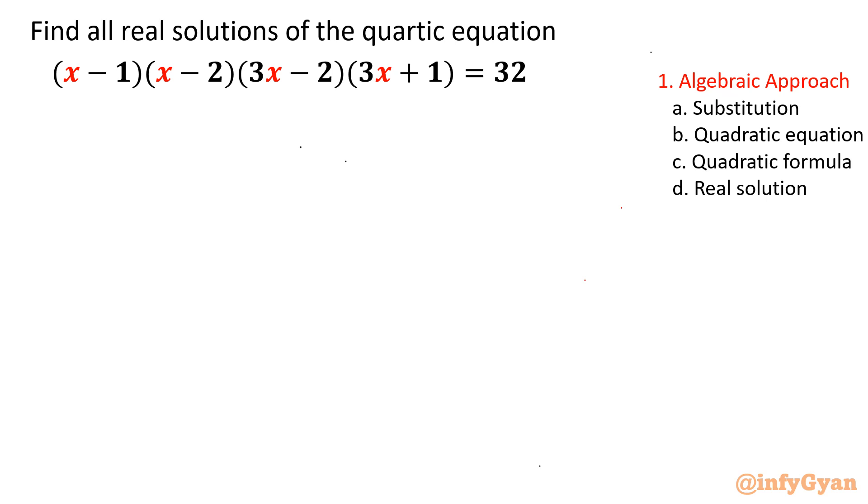Hello everyone, welcome to Infigyan. In this video, we are going to solve one quartic equation with the help of substitution. The equation is (x-1)(x-2)(3x-2)(3x+1) equal to 32. I will use the algebraic method, that means substitution, then ultimately we will get the quadratic formula and real solutions. So let's get started.